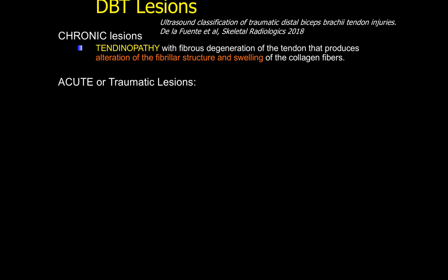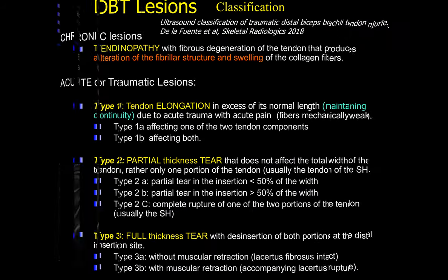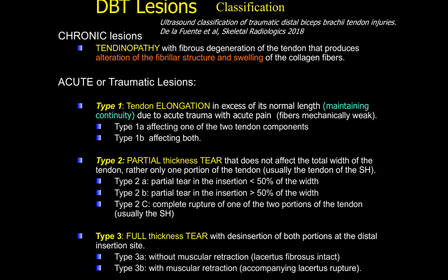We published last year in open access a classification describing injuries to the distal biceps tendon. We have divided our findings into two groups: chronic and acute injuries. In the traumatic group, we found three different types: Type 1 corresponding to excessive tendon elongation that maintains the continuity of the tendon; Type 2 corresponding to partial tears; and Type 3 corresponding to complete full-thickness tears.